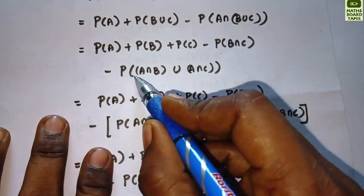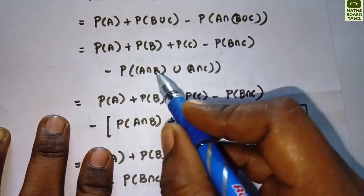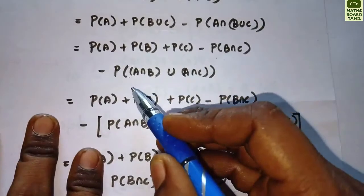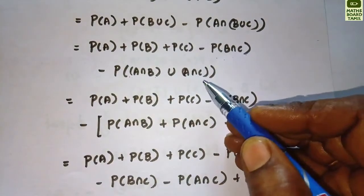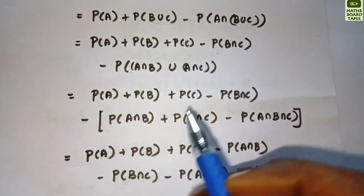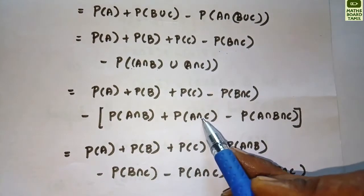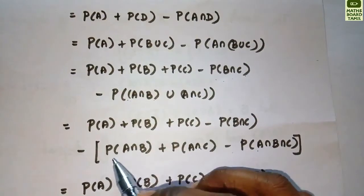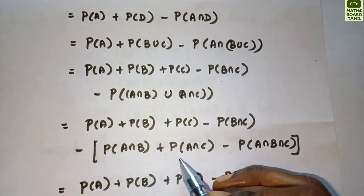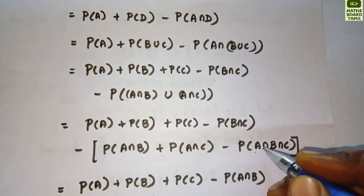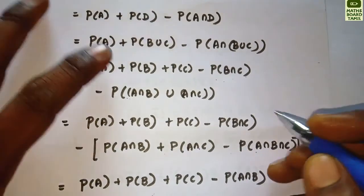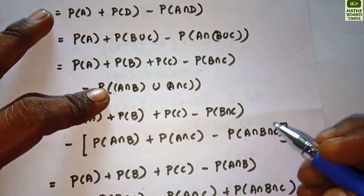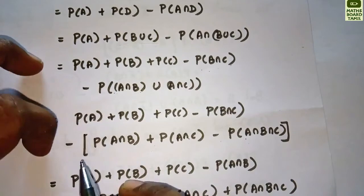Applying the union formula again to the intersection terms, we get: minus probability of A intersection B, minus probability of B intersection C, minus probability of A intersection C, plus probability of A intersection B intersection C. Collecting all terms gives us the final formula for three events.